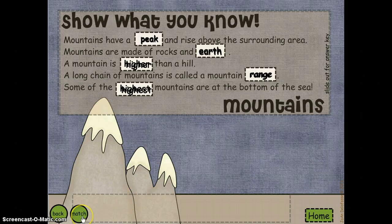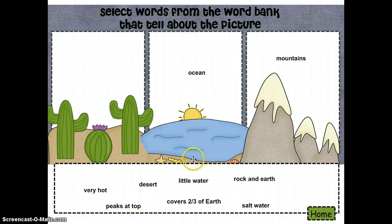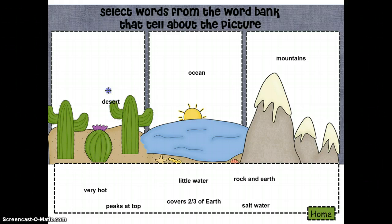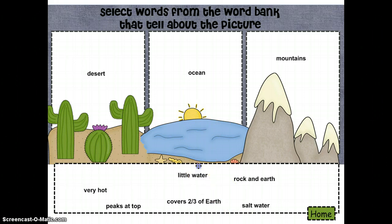Now let's go to our matching game. The matching game is really a type of sorting game — we're going to sort the words to their correct landform. I already know that these are the mountains, this is an ocean, and this is the desert. The word was spinning around, so I know that was the correct answer. An ocean has a lot of water in it, so let's choose 'little water' and see what happens — it snapped right back.